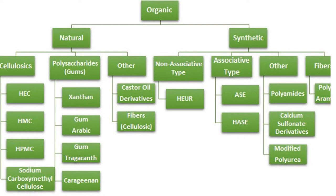When we talk about natural thickeners, we are aware of a large number of polysaccharides like xanthan gum, gum arabic, gum tragacanth, and carrageenan — all of which have wide applicability in the formulation of herbal cosmetics. Cellulosic products also play a role, such as HEC, HMC, HPMC (hydroxypropyl methylcellulose), and sodium carboxymethylcellulose. All these cellulose derivatives act as thickening agents in a wide number of herbal and other formulations.